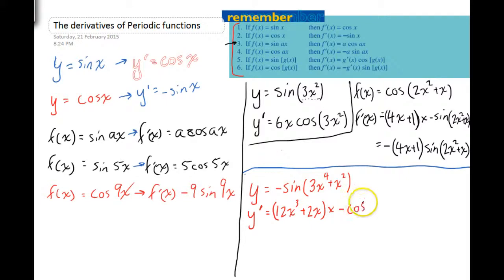So negative cos, and then whatever's in those brackets, so 3x to the 4 plus x squared. Now again, I'm just going to neaten that up by bringing that negative out to the front. Equals negative 12x cubed plus 2x times cos 3x to the 4 plus x squared.